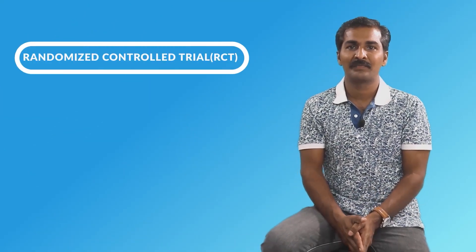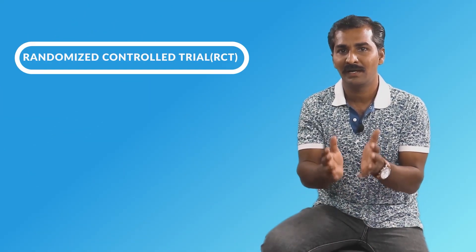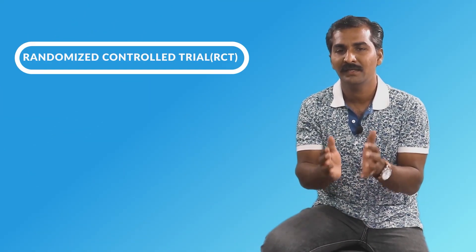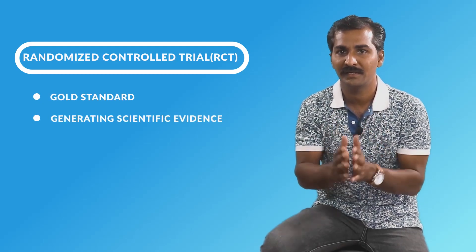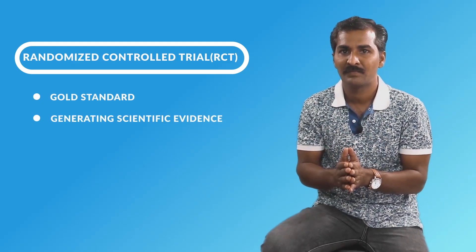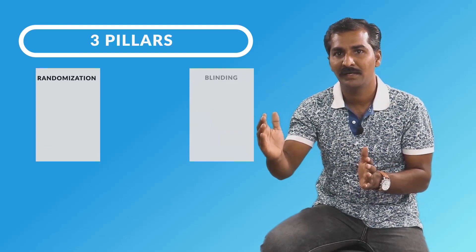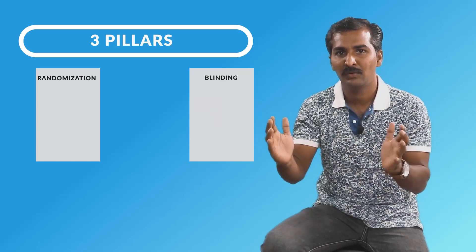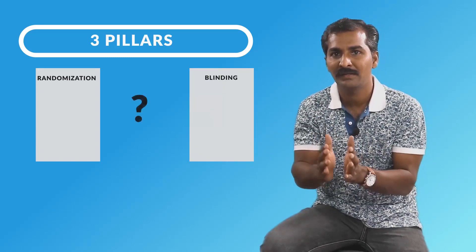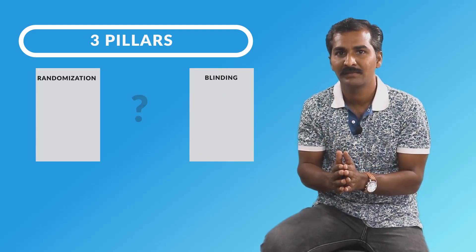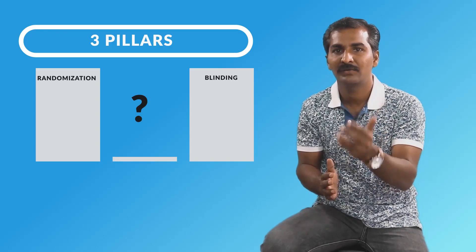Let us talk about randomized control trials today. A randomized control trial, or RCT, is the gold standard in generating scientific evidence. There are three key pillars which make the RCT so scientific: the first pillar is randomization, the second pillar is blinding, and many people often ignore the third pillar.